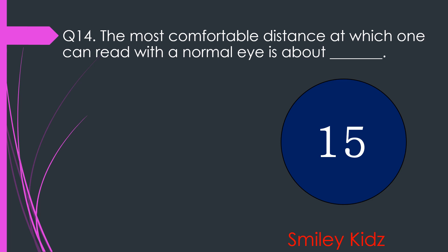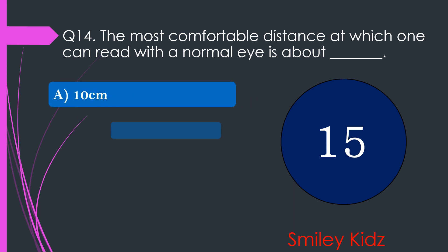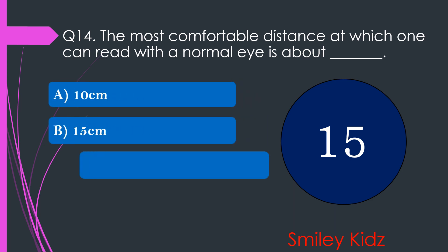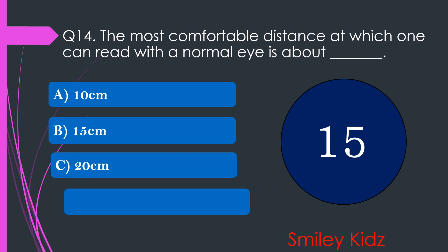Question number 14. The most comfortable distance at which one can read with a normal eye is about dash. The options are A. 10 cm, B. 15 cm, C. 20 cm, or D. 25 cm. Your time starts now.